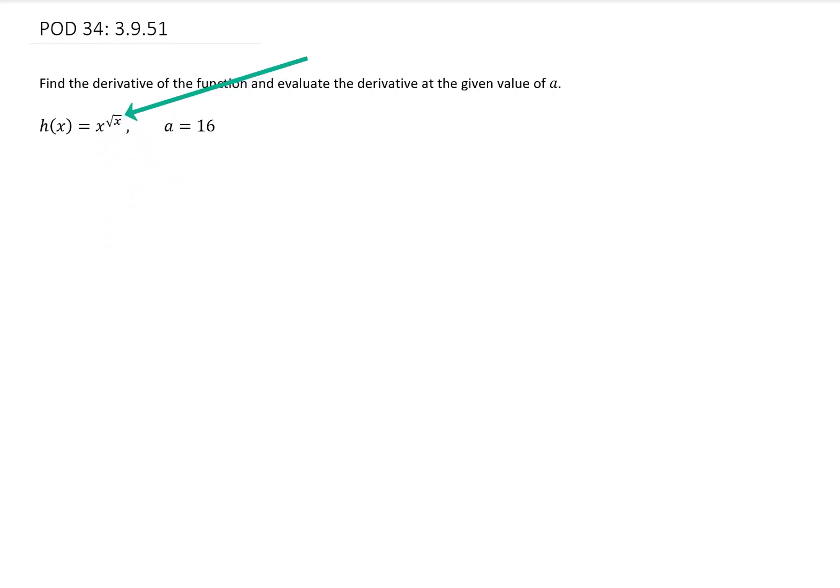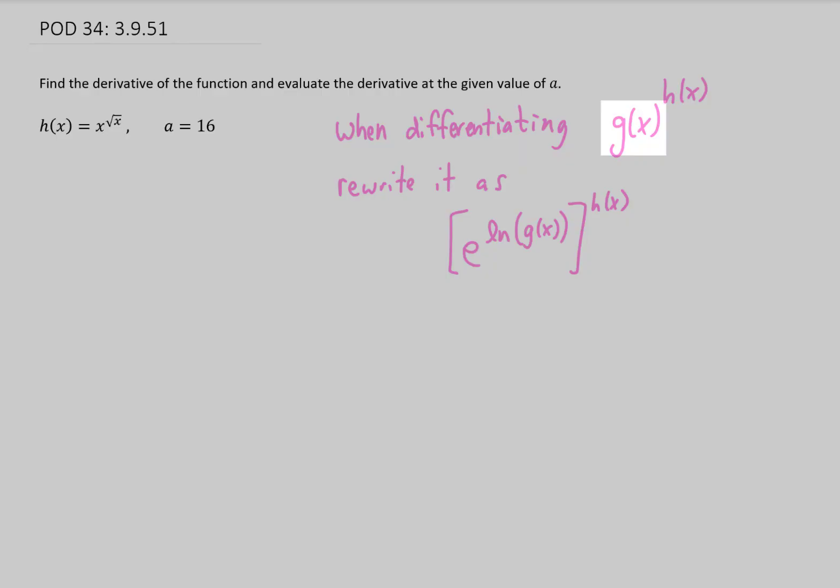Whenever this is the case, we can use a trick. Whenever we're differentiating g of x to the power of h of x, we can start by rewriting this g of x as e to the power natural log of g of x. We need to recall that this exponential function and this logarithmic function cancel each other out because they're inverses of each other, so technically this is the same thing as this. Then what we're going to do is use our exponent rules to say that we have an exponent here raised to another exponent.